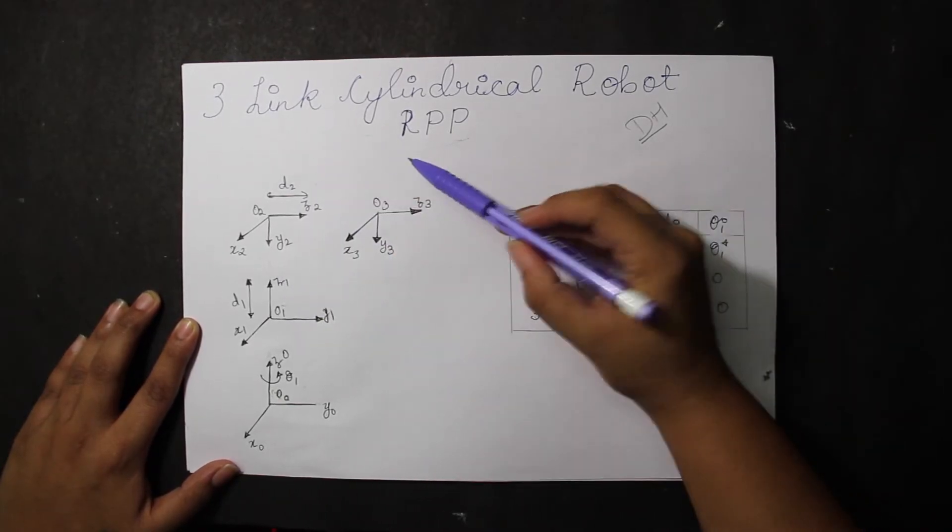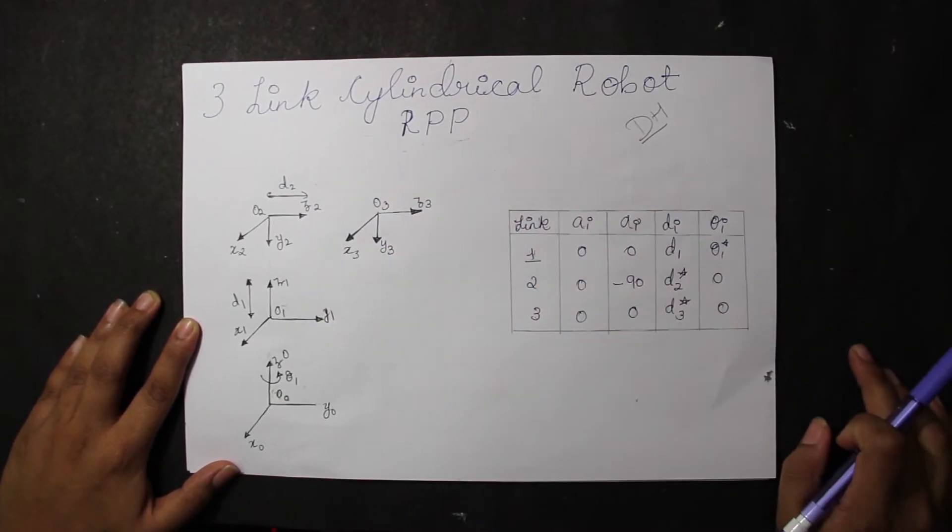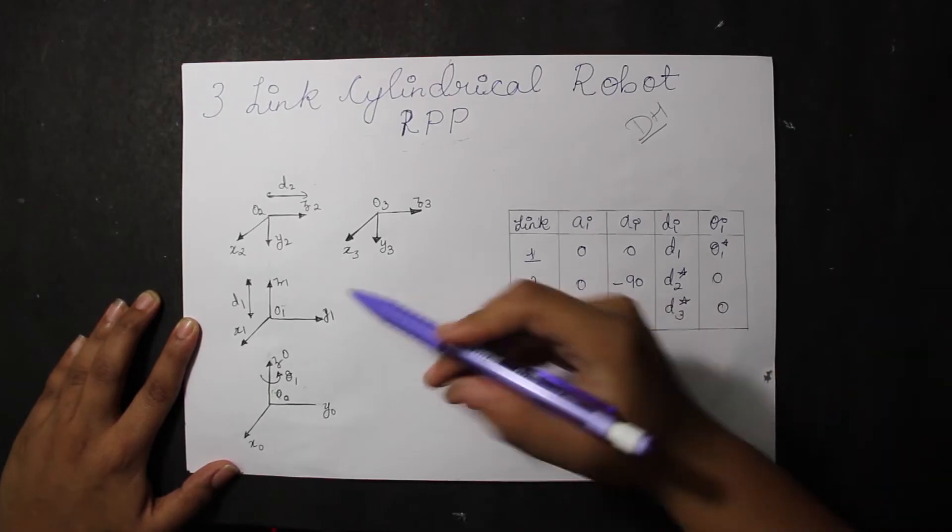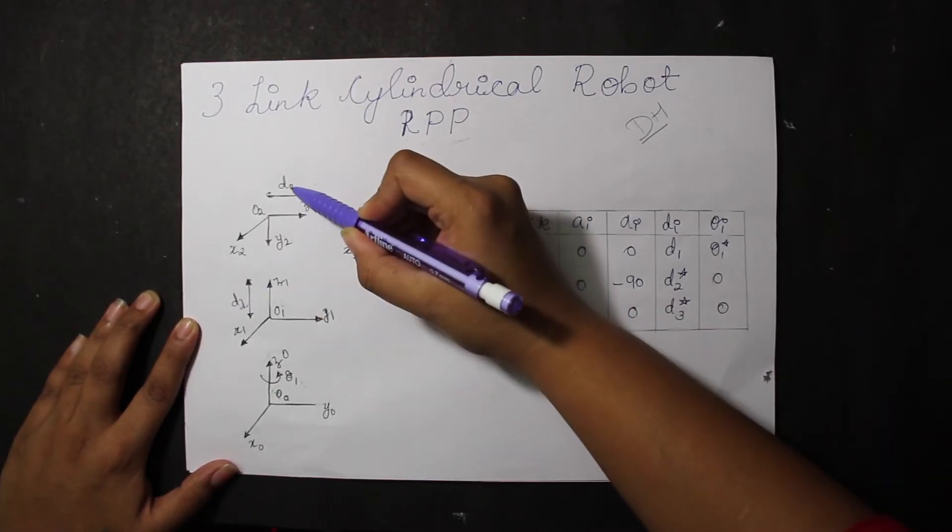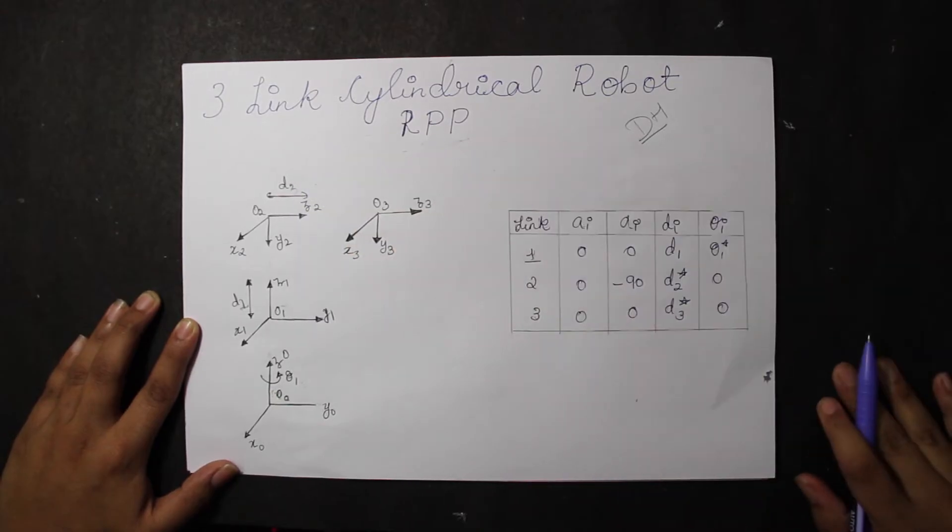That is RPP: for rotation we have theta 1, for prismatic 1 we have D2, and for prismatic 2 we have D3. This is the basic three-link cylindrical robot. Now let's look at it. The link length is not specified and can vary, and that's why we have given it as zero.